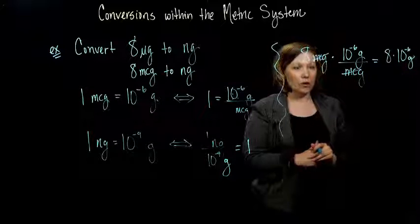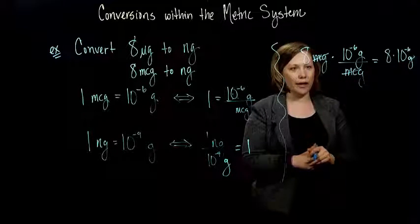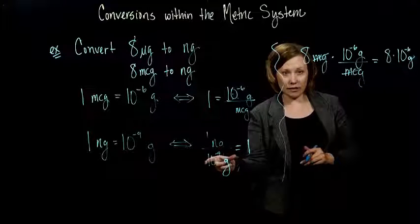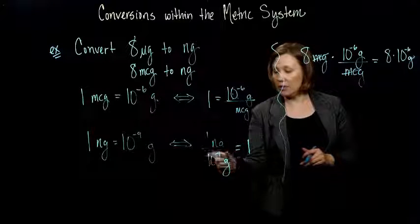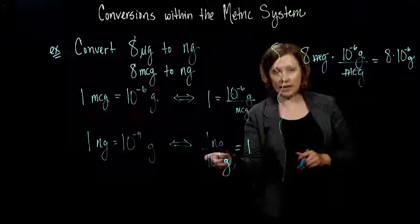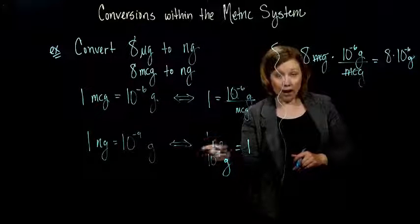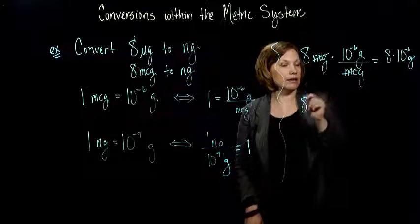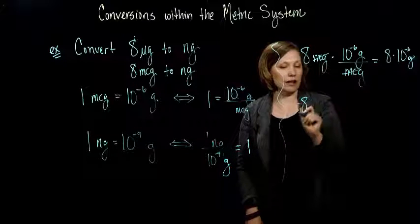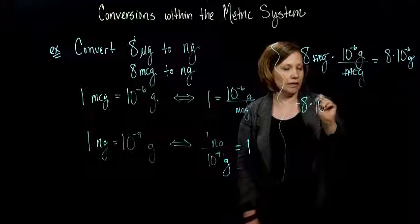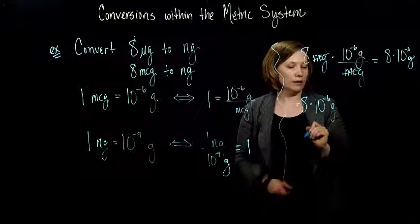Well, how is that helpful? If I look at my second equivalence that I have, 1 nanogram per 10, is the same as 10 to the negative 9 grams. This fraction is also equivalent to 1. So I can take, so this guy then, what we have up here, I'm just going to rewrite it so we can see it a little.